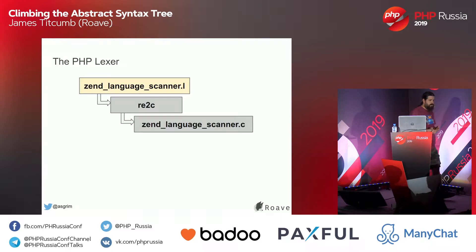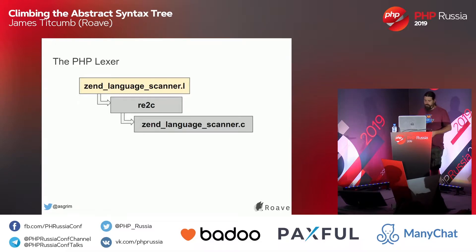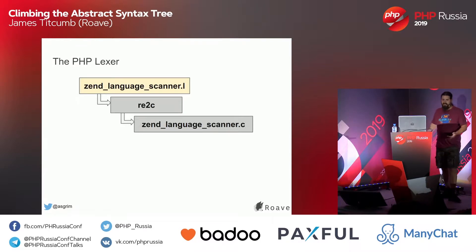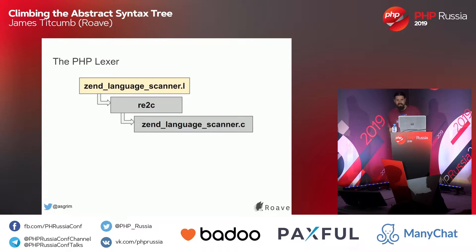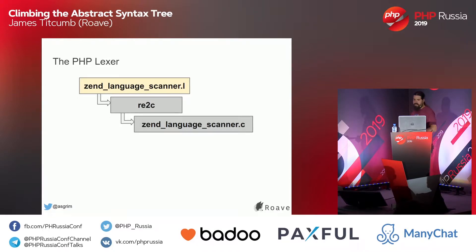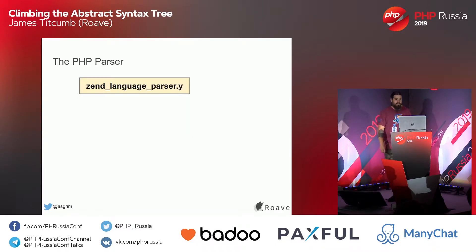Given that syntax definition, we can pass that into the tool called Re2C, and it generates a C file. You can check out the PHP source code and run Re2C with a load of flags. The generated C file has about 8,000 lines of rather badly named variables. There's no point in trying to make heads or tails of it — what is important is what's in the definition.